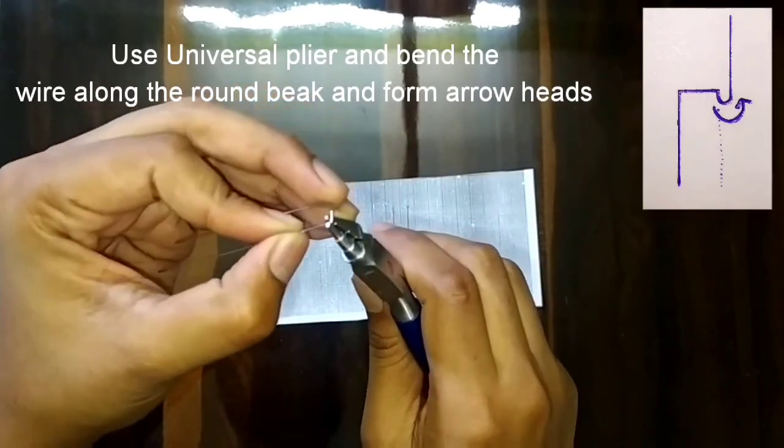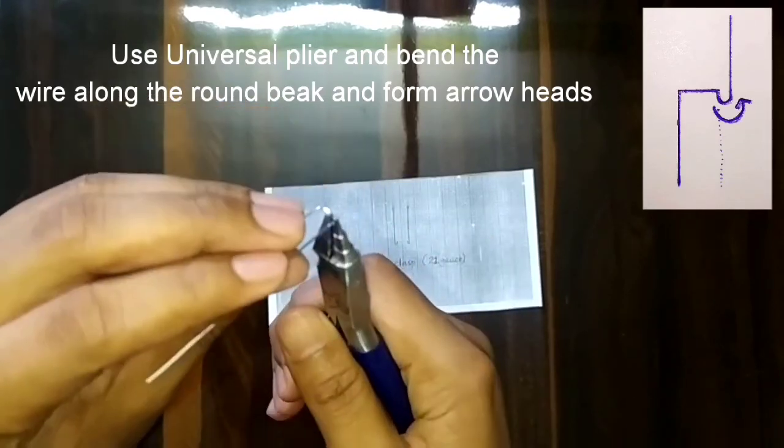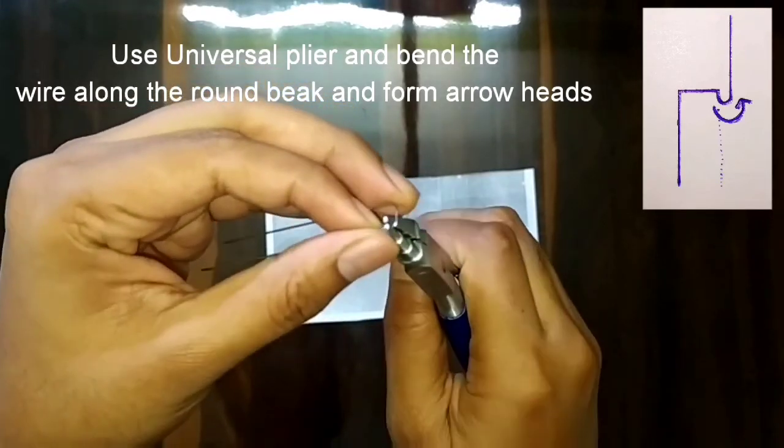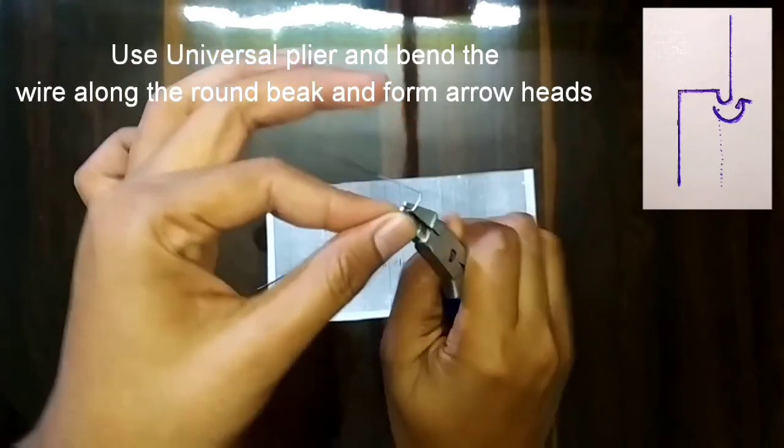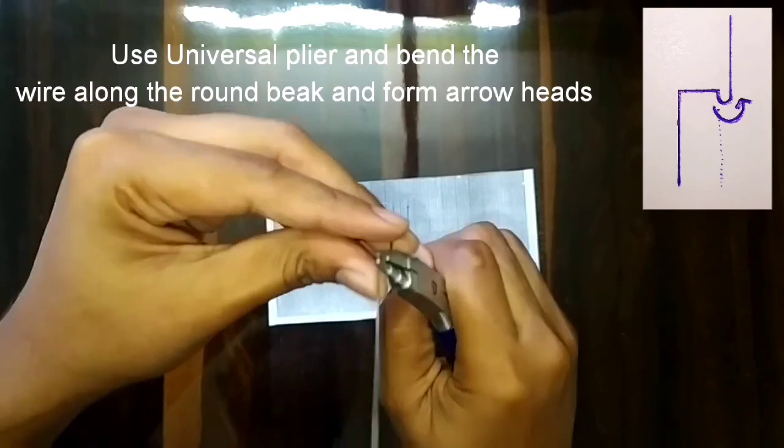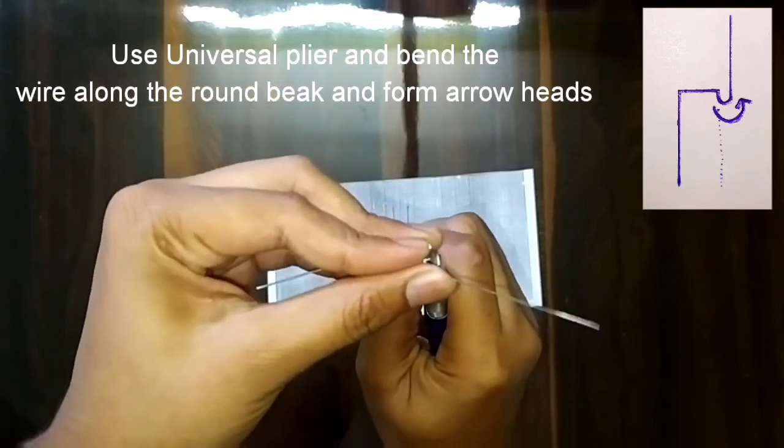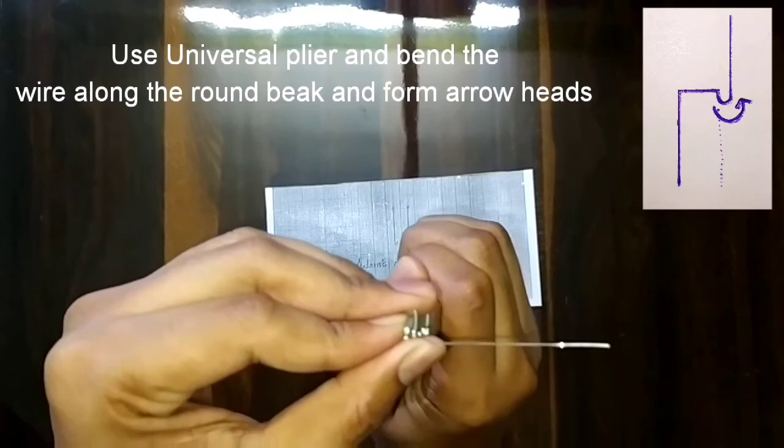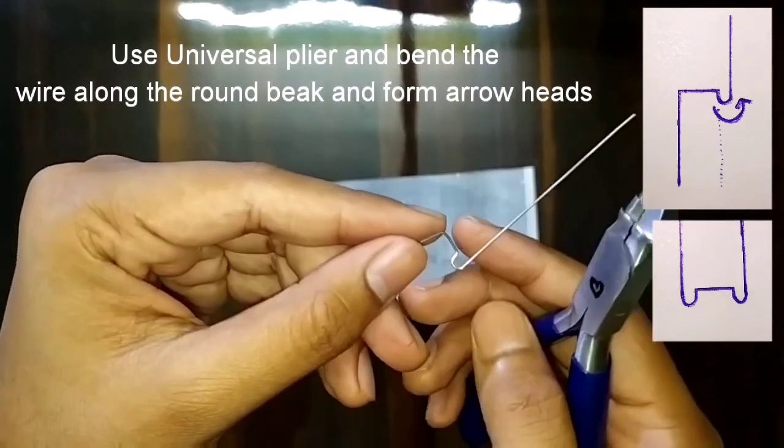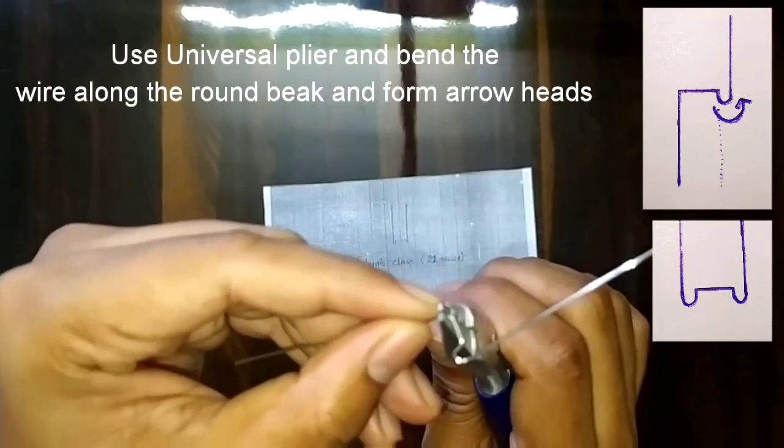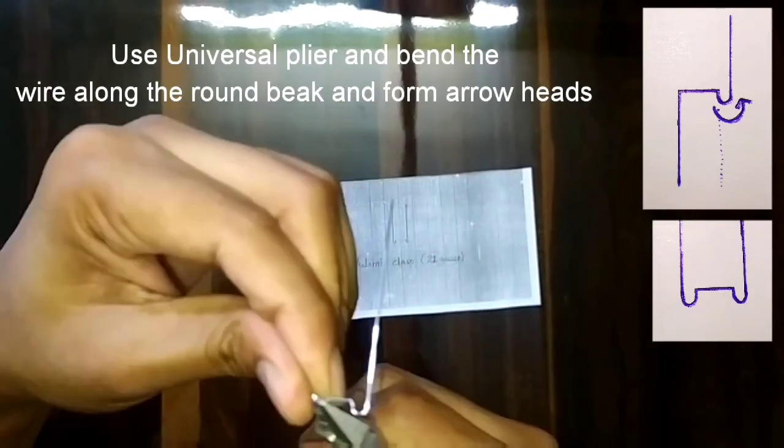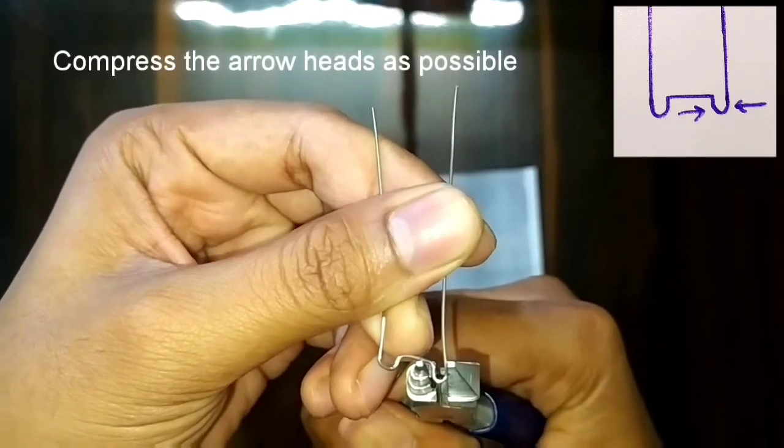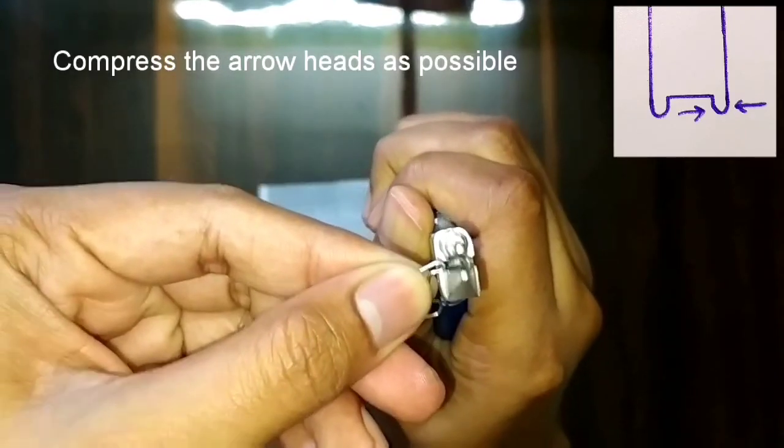To make the arrow heads, hold the wire with the tip of the plier in this position and roll the wire along the round beak as I am doing with the help of the finger and thumb. A round curvature will be formed there as shown in the diagram. Do similarly on the other side also. After this, we will compress the arrow heads and try to make it as narrow as possible.